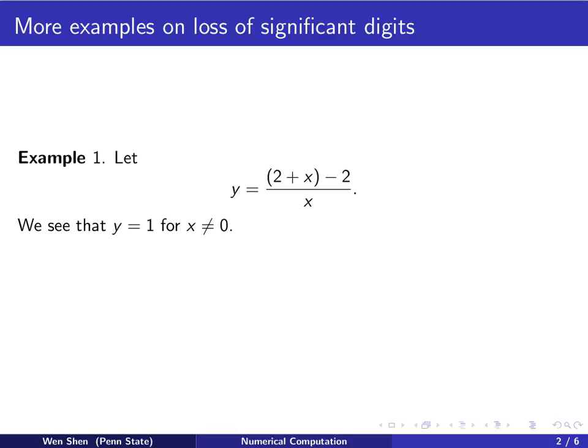For the first example we consider a very simple function, a polynomial divided by a polynomial: y equals (2 + x) - 2 over x. It's kind of trivial since in the numerator the 2 can cancel the negative 2, so theoretically this equals 1 when x is not 0, and if x equals 0 then this function is not defined.